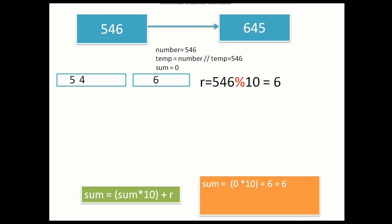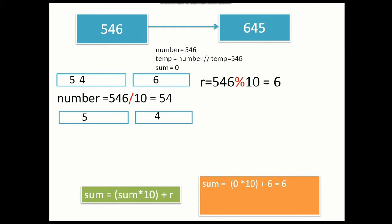Before starting the next iteration, we take the number as 54, since 6 has already come out. We divide 546 by 10, which gives 54 as the new number. Now for 54, we divide by 10 again and the remainder is 4. That remainder adds into sum: 6 × 10 = 60, plus 4 is 64. So in this way we have reversed 2 digits. I hope you understand the logic behind using this formula for sum.